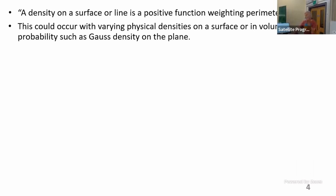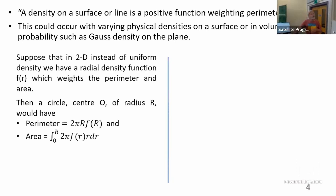That's the definition of what we mean by a density on the surface or a line. It's a positive function and it weights the perimeter and the area equally. It could be a physical density, but there's a lot of work that's been done on Gauss density as probability on the plane. This is how we do the working. Suppose in 2D, instead of the uniform density, we've got a radial density function which weights the perimeter and the area. Then the perimeter of a circle centered at the origin would be 2πr·f(r).